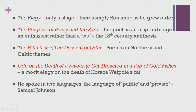He also became increasingly romantic as he grew older, and most of his later works could be classified among the poets of the romantic century. In one of his works, The Progress of Poesy and The Bard, he even clarifies that the poet is not a product of genius but is an inspired singer — an enthusiast rather than a wit. This was in stark contrast with the dominant views of poet and poetry held during the Augustan times. In a couple of other works, The Fatal Sisters and The Descent of Odin, he also talks about the Celtic revival dominating the 18th century scene, composing poems primarily about Northern and Celtic themes.